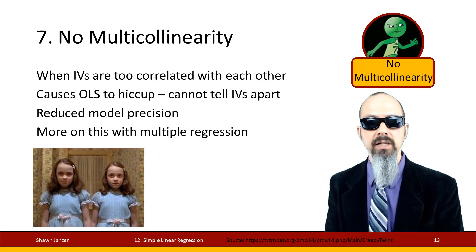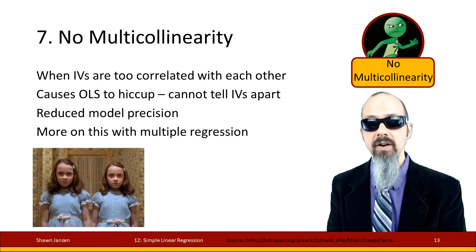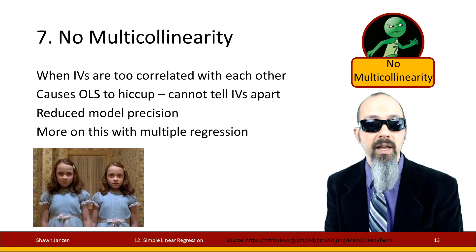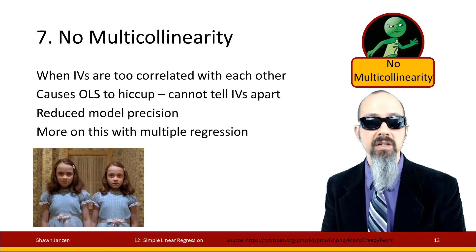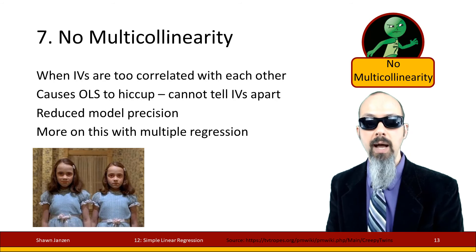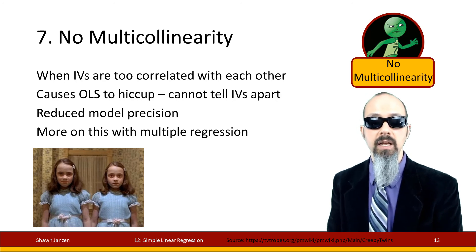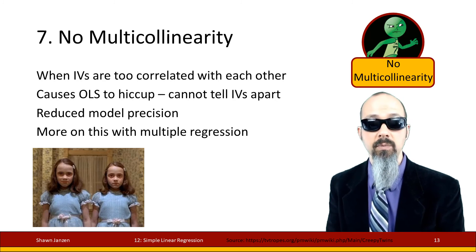The seventh assumption is no multicollinearity, which happens when your independent variables are too correlated with each other. In simple linear regression with only one independent variable this isn't a concern yet, but I'm introducing it now as part of the full OLS assumption suite — we'll revisit it in multiple regression. The problem is that OLS can't determine which independent variable to credit when they become too correlated, and it affects model precision.